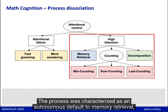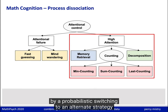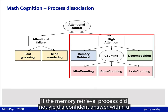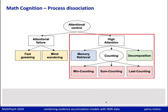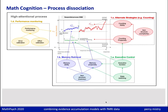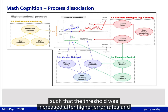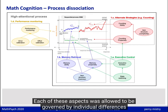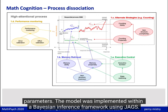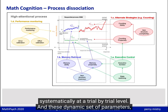The process was characterized as an autonomous default to memory retrieval, represented by the blue diffusion process in the illustration, followed by a probabilistic switching to an alternate strategy if memory retrieval did not yield a confident answer within a certain time. A layer of executive function parameters controls the strategy switching process; the red line in the illustration shows a switch to a counting strategy. In addition, the decision threshold was modulated across trials by characterizing an error-effort tradeoff, such that the threshold increased after higher error rates and reduced after longer decision times. Each of these aspects was governed by individual difference parameters, and the model was implemented within a Bayesian inference framework in JAGS.